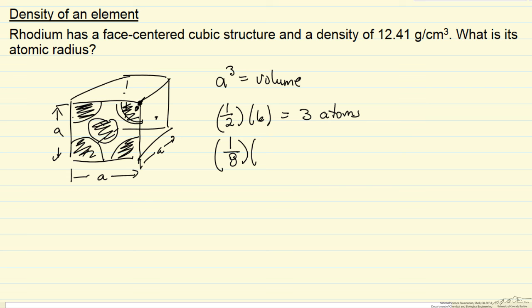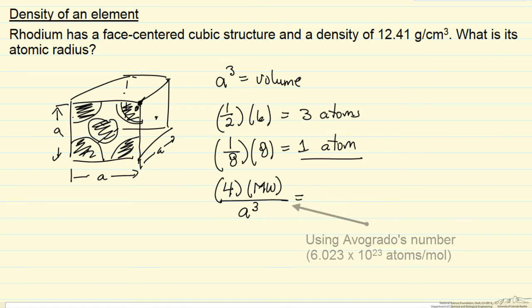Now, there are eight corners, so we have one atom from the corners. So we have four atoms total, and a molecular mass divided by the volume would be our density, which we are given as 12.41 grams per cubic centimeter.